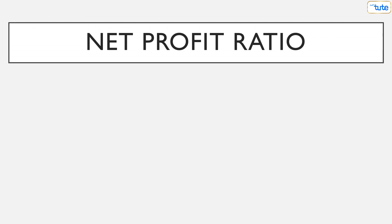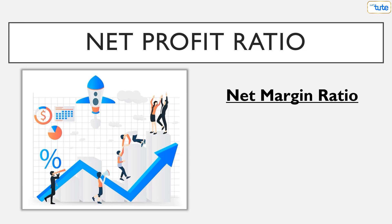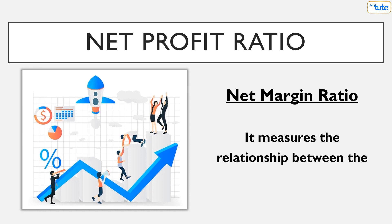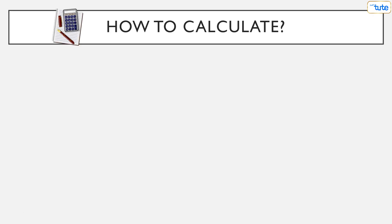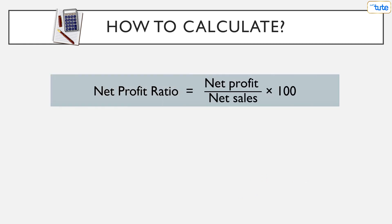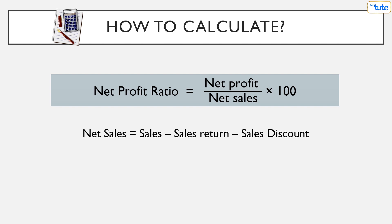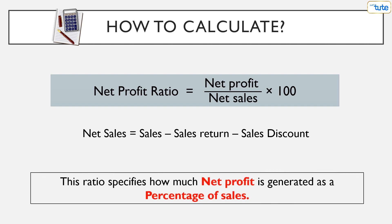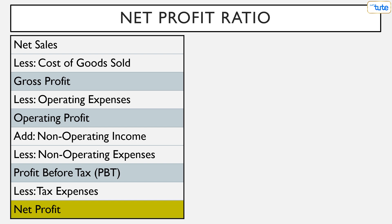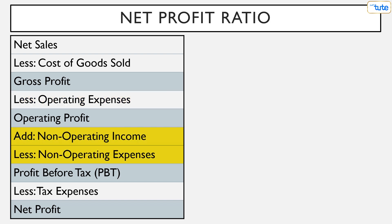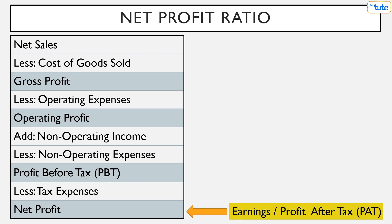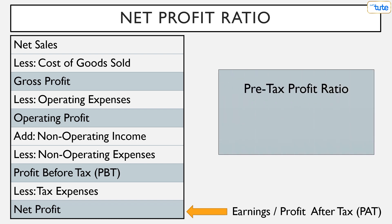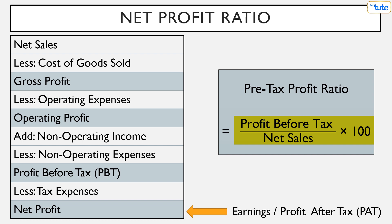Let's now understand and analyze the net profit ratio, also known as the net margin ratio. This ratio measures the relationship between the net profit and the sales of the business. The formula is: net profit divided by net sales multiplied by 100. This ratio specifies how much net profit is generated as a percentage of sales. Net profits are the actual bottom-line earnings after all the COGS and operating and overhead costs are removed and all irregular incomes and expenses are accounted for — also known as profit or earnings after tax. Some analysts are also interested in the pre-tax profit ratio, derived by dividing profit before tax by net sales multiplied by 100.